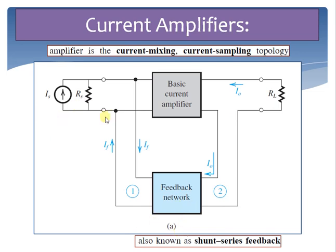The suitable feedback topology for the current amplifier is current mixing and current sampling. Due to the parallel or shunt connection at the input and the series connection at the output, this topology is called shunt-series feedback. It stabilizes the current gain and results in lower input resistance and higher output resistance, which are desirable properties of the current amplifier. The decrease in input resistance occurs because the feedback current IF subtracts from the input current IS, so a lower current enters the basic current amplifier.